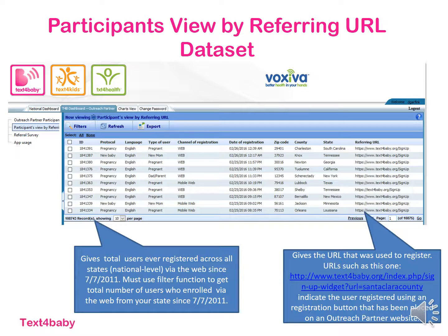The second data set you have access to, participants view by referral URL, which is now highlighted on the left there, allows you to track all enrollment since July of 2011 that originated from a specific website. This data set is really designed for partners who have a Text for Baby enrollment link on their website. For example, if you put one of our web enrollment buttons on your website that links participants to a sign up page for Text for Baby, you'd be able to track enrollees who used that here using the referral URL column on the right. That site of origin is identifiable through the latter part of the referring URL right after Text for Baby's name, which is chosen by the partner. Note that this data set is at the national level, so it will show all states, and if you want to look at web enrollees from just your state, you'll need to apply a filter.